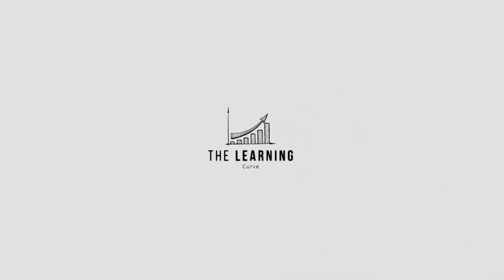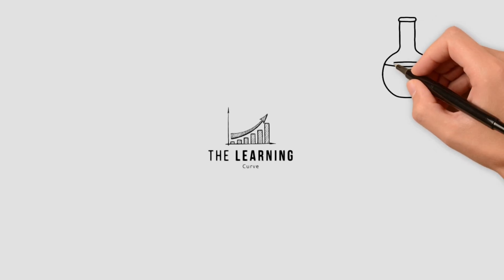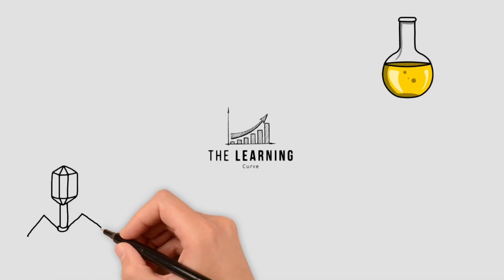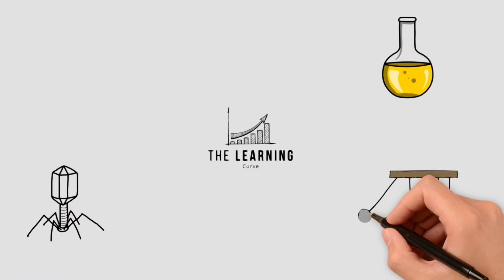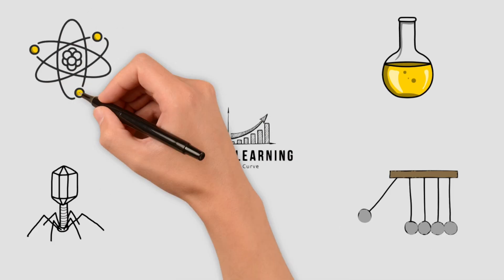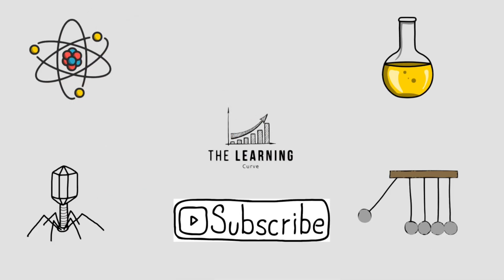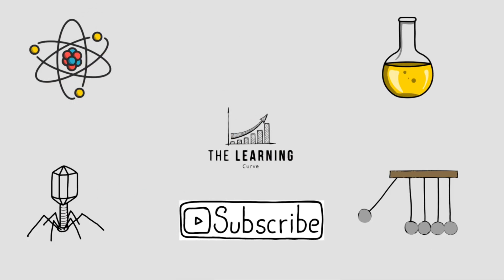So now you know how to explain bond energies, activation energy, and identify whether a reaction is endothermic or exothermic. This topic often links to rates of reaction and reversible reactions, so make sure to understand those topics as well. And remember, in the exam always label your energy diagrams clearly and watch the sign of delta H. If you found this video helpful, don't forget to like and subscribe and check out our website. See you next time!